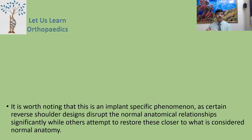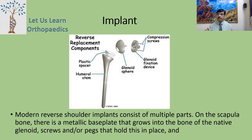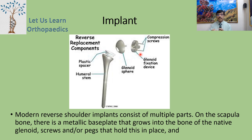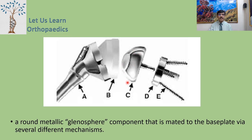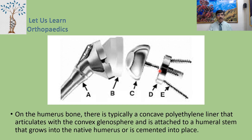The modern reverse shoulder implant consists of multiple parts. On the scapula, there is a metallic base plate that grows into the native glenoid bone, held in place by screws or pegs, and a round metallic glenosphere component mated to the base plate. On the humerus, there is a concave polyethylene liner that articulates with the convex glenosphere, attached to a humeral stem that grows into or is cemented into the native humerus.